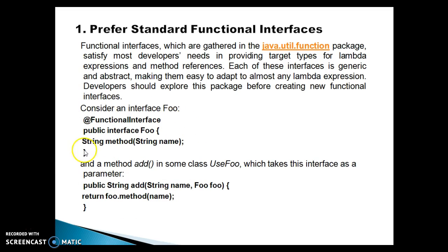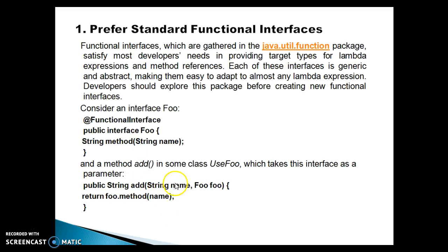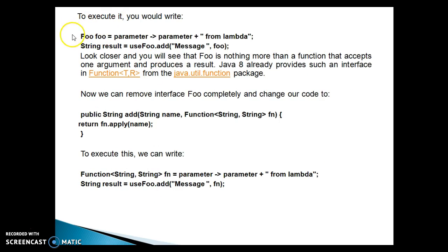Let me explore these things through an example. Consider an interface called Foo, which is a functional interface containing a method called 'method' that accepts a String argument. Suppose you define this functional interface Foo with that functional method, and also define an 'add' method in a class called UseFoo. This 'add' method accepts two arguments: first is a String, and second is a reference of Foo itself. Using this reference you make a call to the method, passing the string as an argument. To execute this code, you can have a code snippet like this.